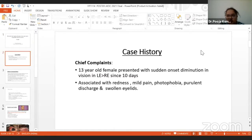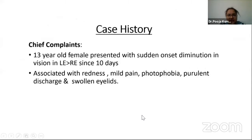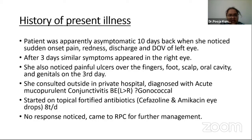The patient is a 13-year-old female who presented with sudden onset diminution of vision in the left eye, more than the right eye, for the past 10 days. It was associated with redness, mild pain, photophobia, mucopurulent discharge, and swelling of both eyelids. The patient was apparently asymptomatic 10 days back when she noticed sudden onset pain, redness, discharge and diminution of vision in the left eye. After three days, she complained of similar symptoms in the right eye. She also noticed painful ulcers over the fingers, foot, scalp, oral cavity, and genitals on the third day.